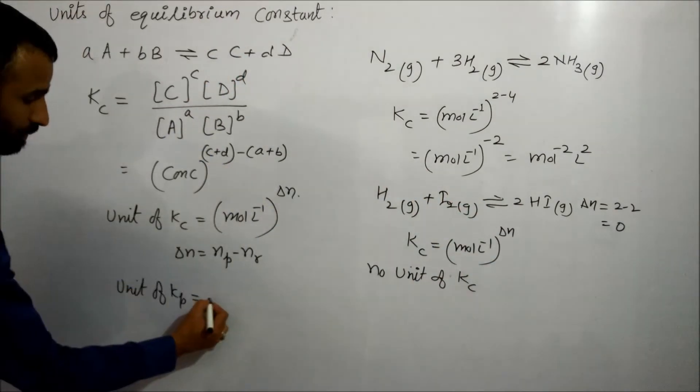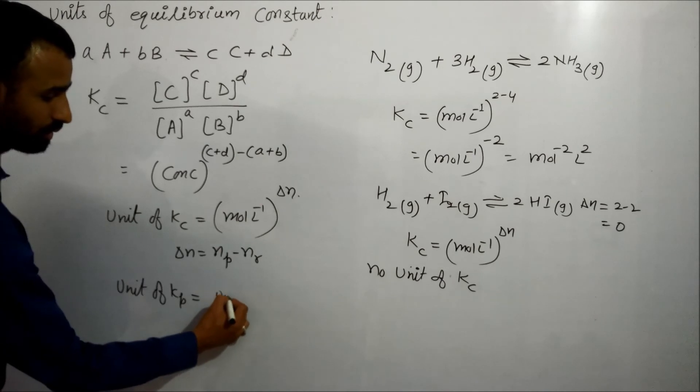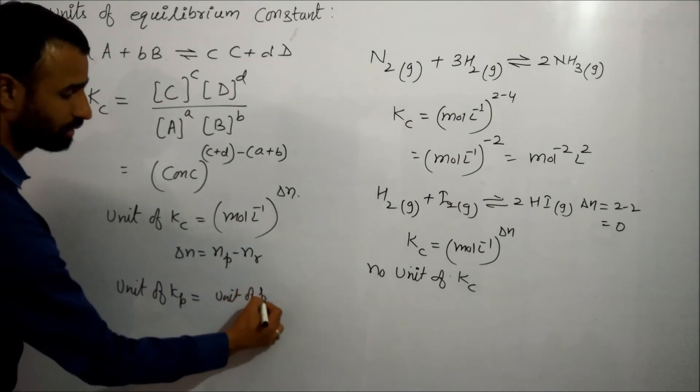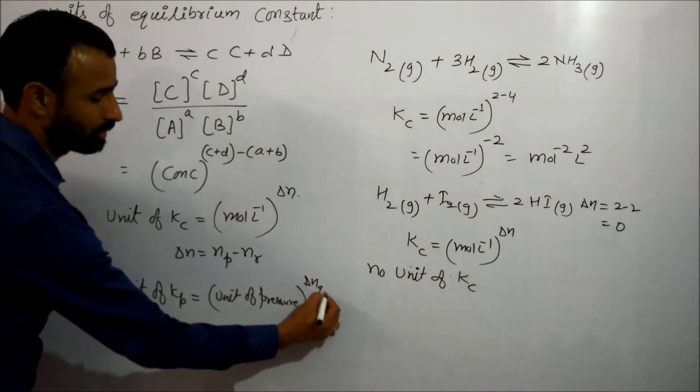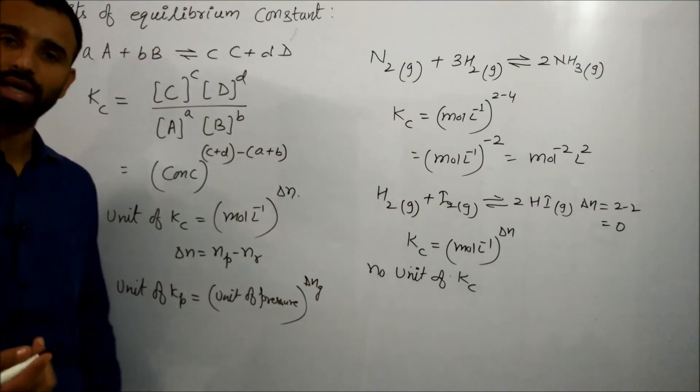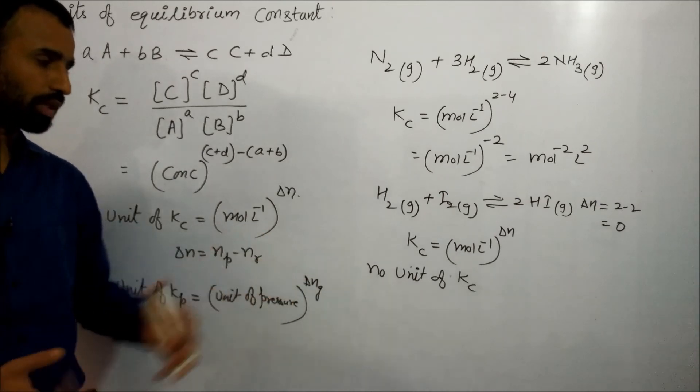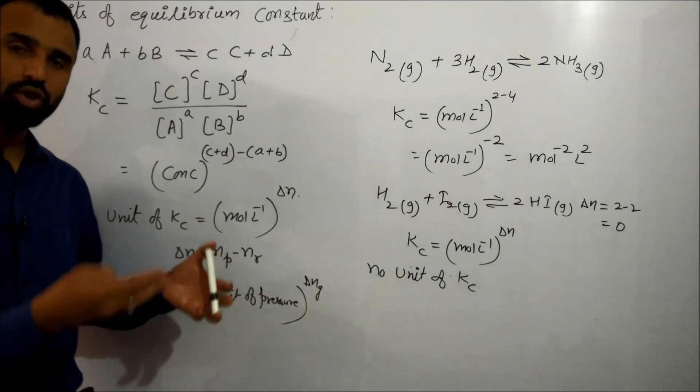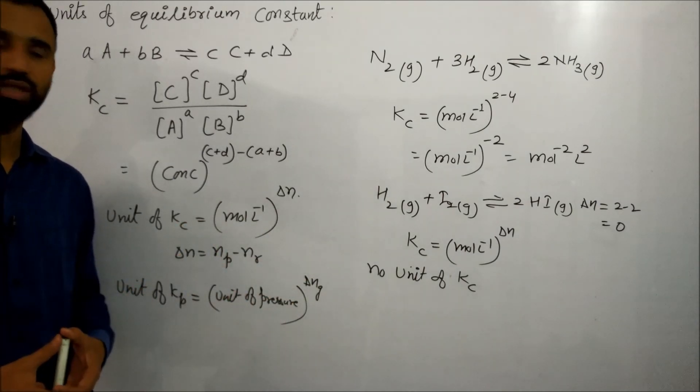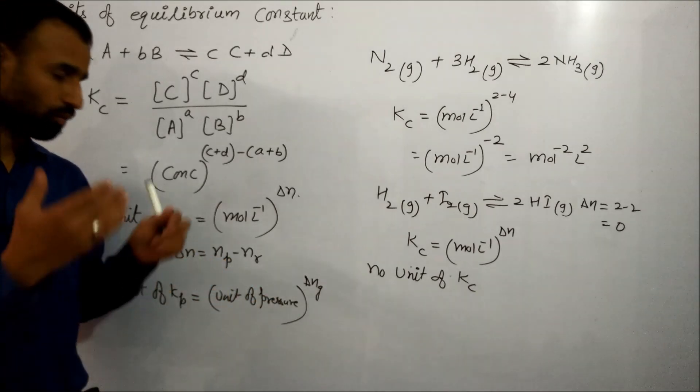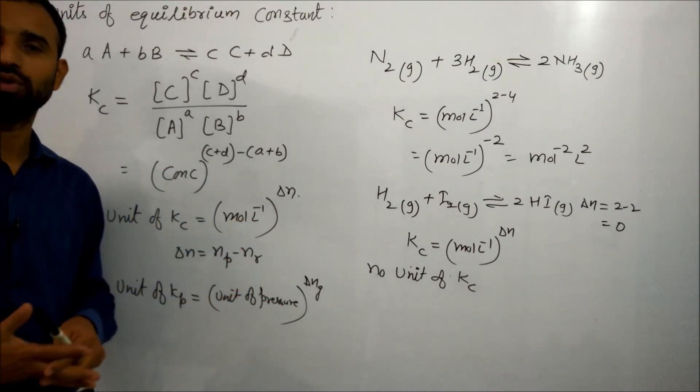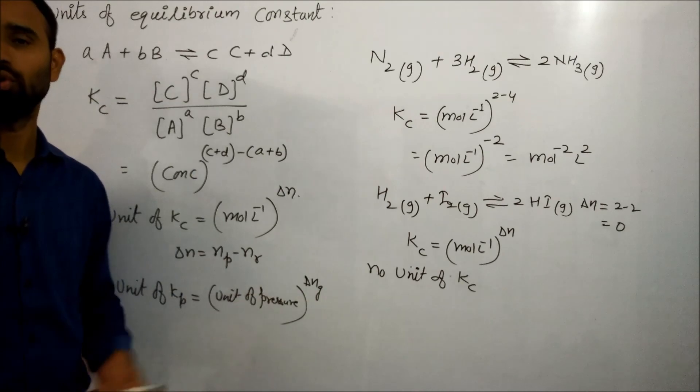Unit of Kp is equal to unit of pressure raised to power delta Ng, atmosphere raised to power delta Ng. And again, if number of moles of product is equal to number of moles of reactant, then it has no unit.